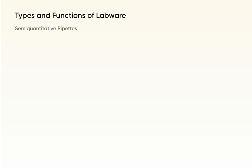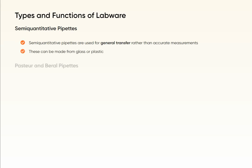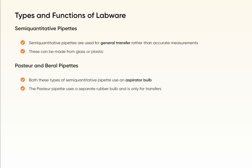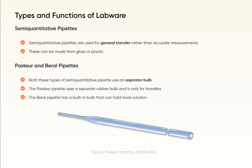Semi-quantitative pipettes are used for general transfer rather than accurate measurements and can be made from glass or plastic. Both the Pasteur and Beryl pipettes are semi-quantitative pipettes that use an aspirator bulb. The Pasteur pipette uses a separate rubber bulb and is only for transfers, while the Beryl pipette has a built-in bulb that can hold more solution.